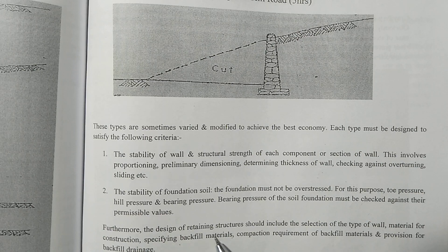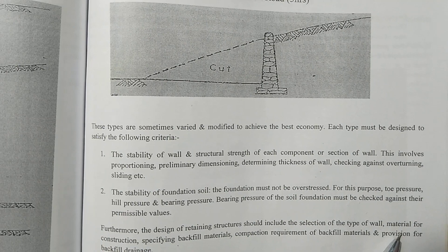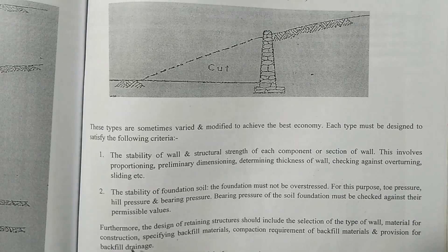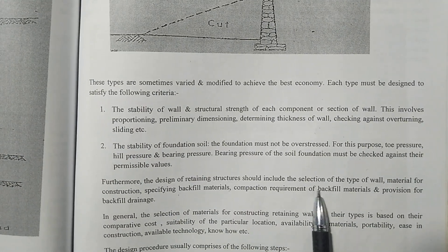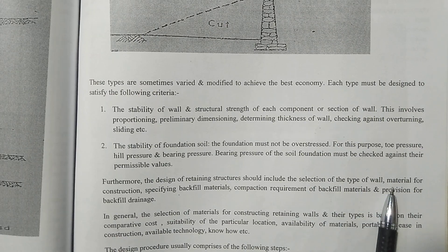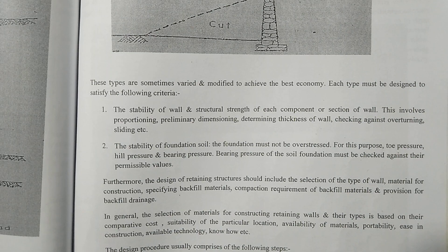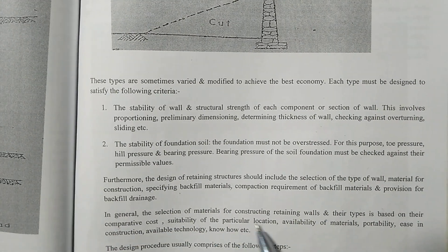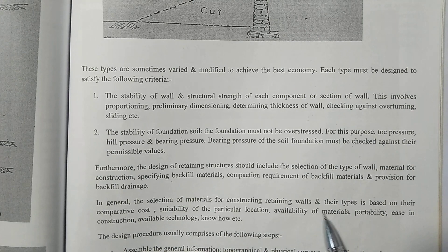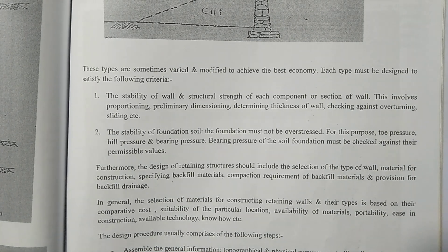Furthermore, the design of retaining structures should include selection of the type of wall, material for construction, specifying backfill material, compaction requirements of backfill material, and provision for backfill drainage. In general, the selection of material for construction of retaining walls and their use is based on their comparative cost, depending on location and material availability.